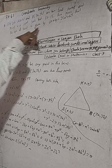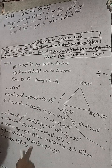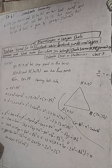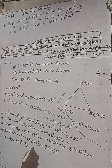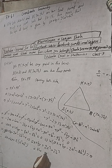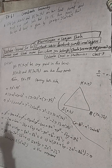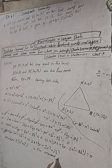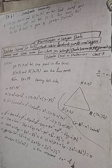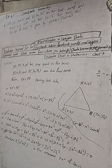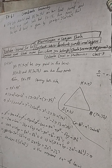Therefore, the equation of the locus is ax + by = 2(a² + b²). This is proved. This is the required equation of locus.